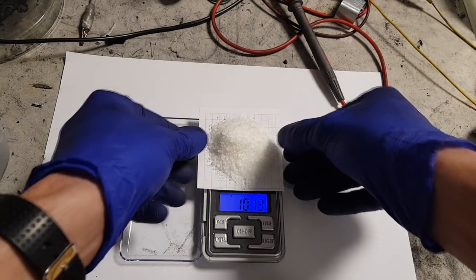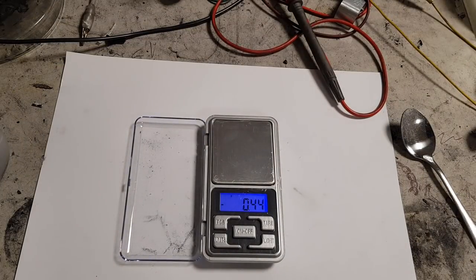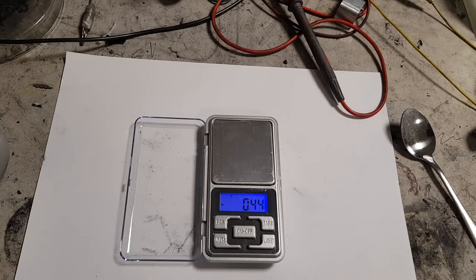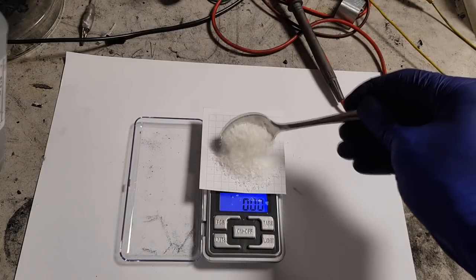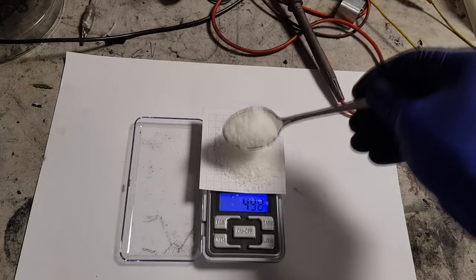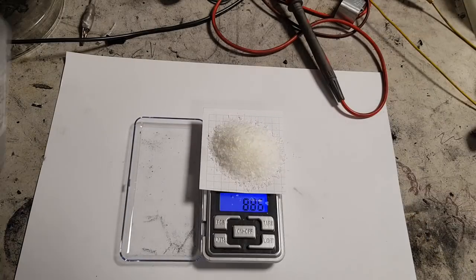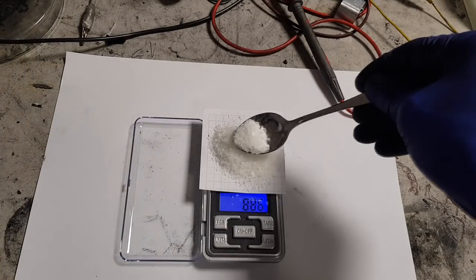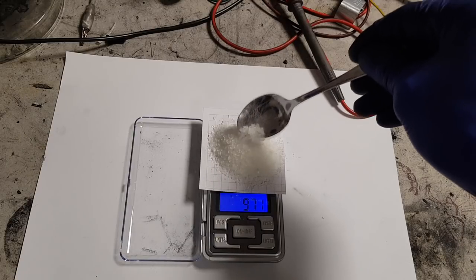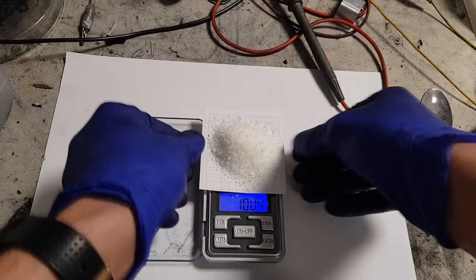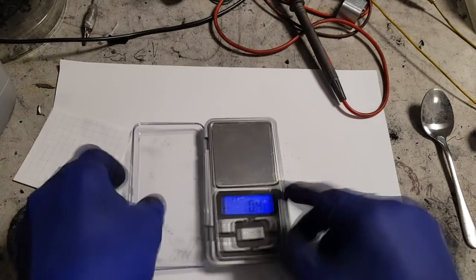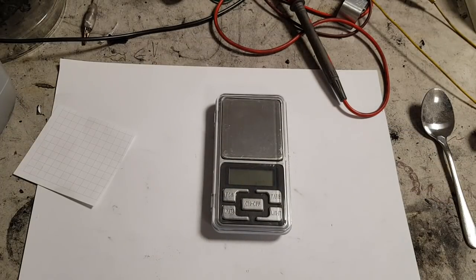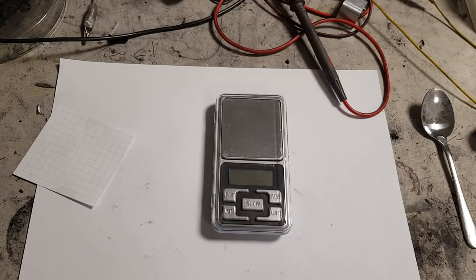I will add two times 10 grams of PVA. And another 10 grams. So, like I said, you add 10 grams of potassium hydroxide and 20 grams of PVA into 300 milliliters of water.